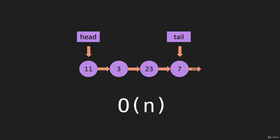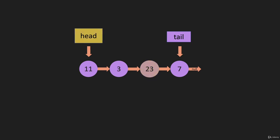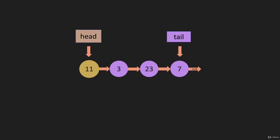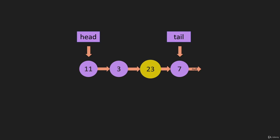Now let's look at finding an item. We can find something by its value or its index. If we're looking for the number 23, we have to start at the head and check each node until we find it — that's O(n). What about by index? If we're looking for something at index two, we still have to start at the head and iterate through. So whether we're looking for something by value or by index, it is O(n).